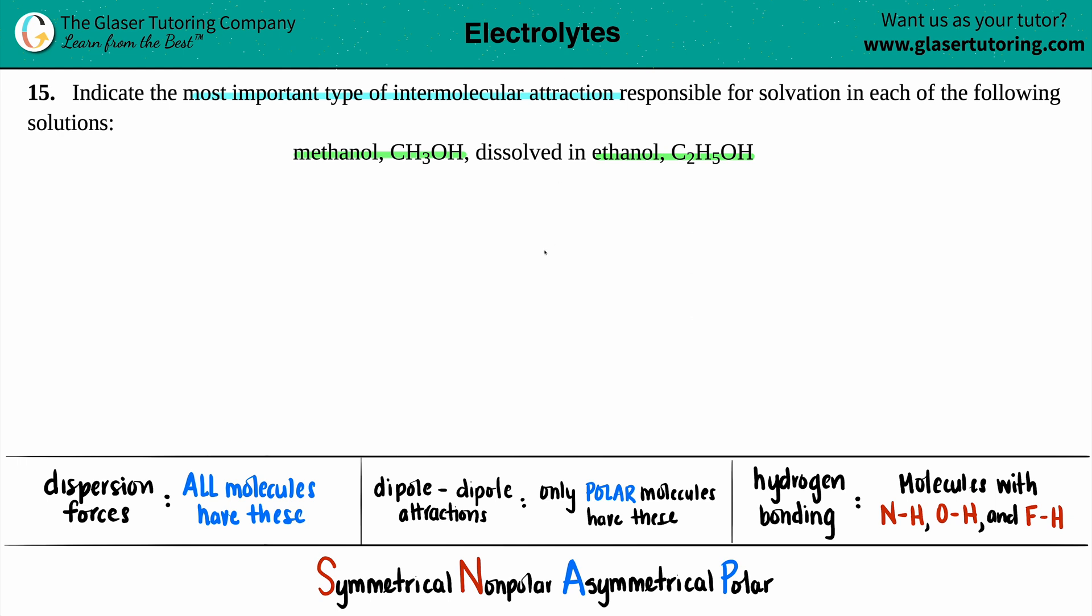Whenever you have a substance being dissolved into another substance, the smaller one that's being dropped into the bigger one is the solute. The substance that is the larger one that you're dissolving something in is called the solvent.